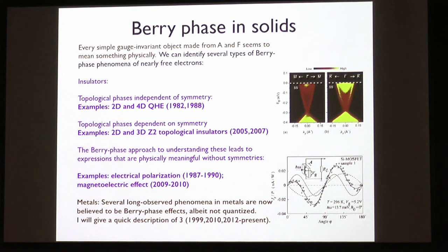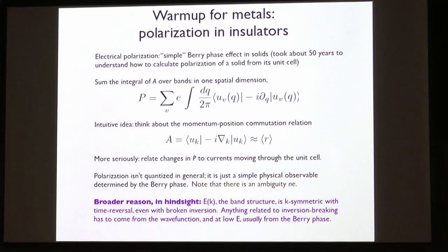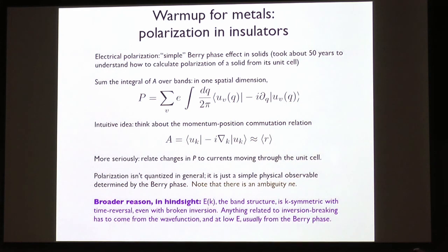Before moving to metals, I want to talk about some rules in optics that don't care much whether we're in a metal or an insulator. The expression for polarization of a one-dimensional band structure — from Kingsmith and Vanderbilt — is just the integral of A over the Brillouin zone. That tells us the electrical polarization, which has to do with how electrons are located in space. More rigorously, changes in polarization are related to currents moving through the unit cell.